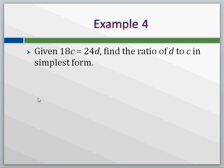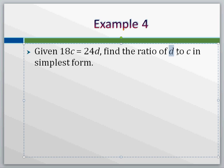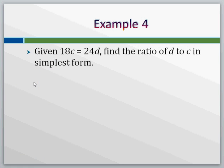We have one more example here. If we're given eighteen c equals twenty-four d, and we want to find the ratio of d to c. Remember, with d to c, we can write that expression as d over c. So we need to ask ourselves, what over what would cross multiply to make d over c?